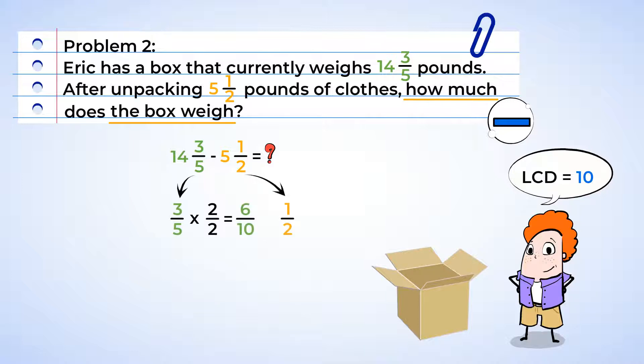We've got three fifths by two over two is six tenths. To change one half, we need to multiply by five over five. Now we got five tenths and we are ready to subtract. Fourteen and six tenths minus five and five tenths.